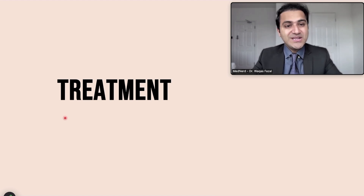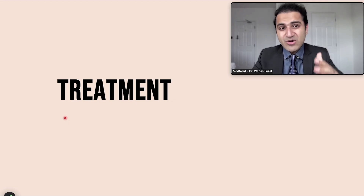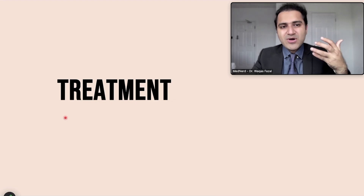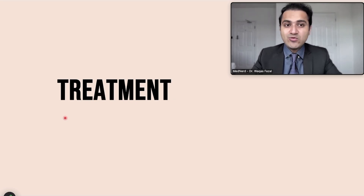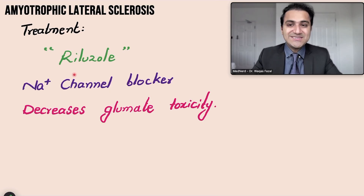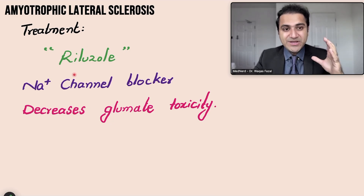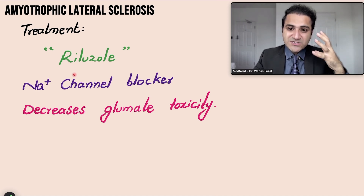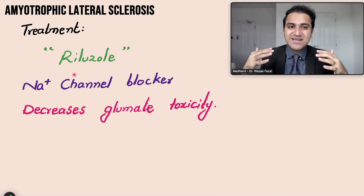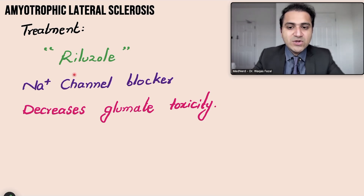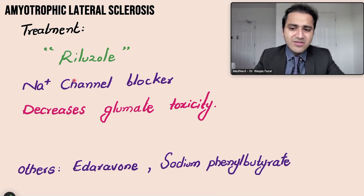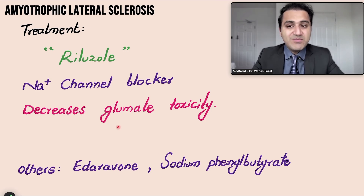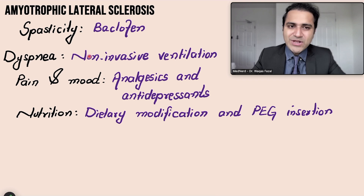Unfortunately there is no specific curative treatment for ALS. We only have a few drugs that are slightly effective; they only prolong life by two to three months. The only drug you need to remember for ALS — commonly tested in exams — is riluzole. Riluzole is a sodium channel blocker that decreases glutamate activity; glutamate is an excitatory neurotransmitter, so riluzole reduces excitation. It is given at 50 mg twice daily. Other drugs being tested include edaravone and sodium phenylbutyrate.